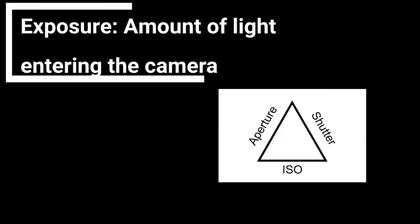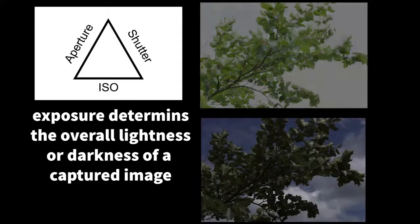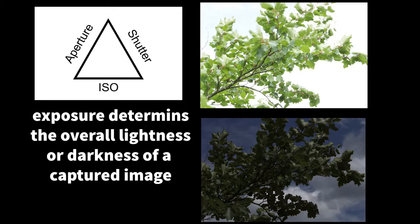In photography, exposure is the amount of light entering the camera. Exposure determines the overall lightness or darkness of a captured image. Here in the two images on the right-hand side, you can see one that's really bright and one that's not very bright. Neither of them are perfectly exposed — we would call the upper one overexposed and the lower one underexposed.